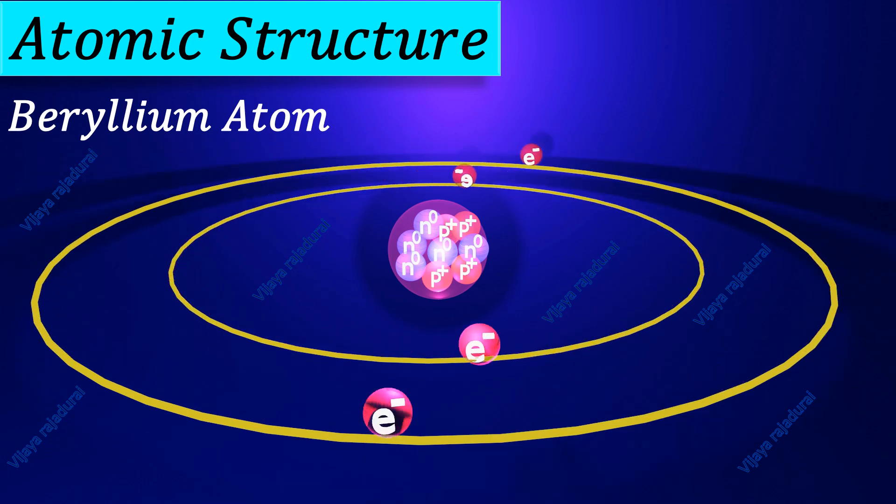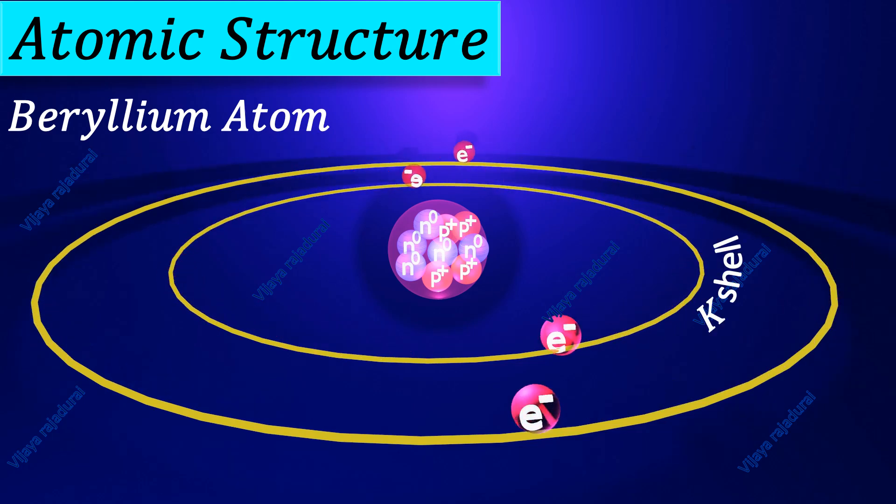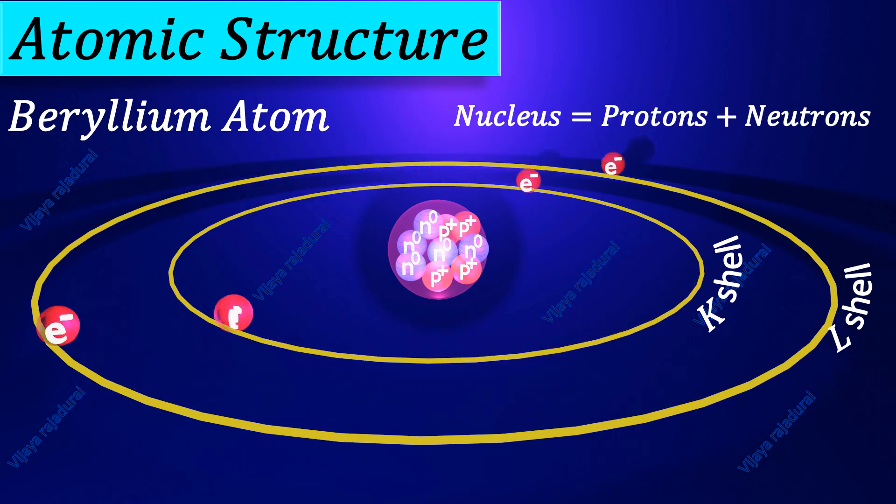In this atom, 4 electrons are present. Among these 4 electrons, 2 electrons are present in the K shell and the rest of the 2 electrons are present in the L shell. We know that nucleus consists of protons and neutrons.